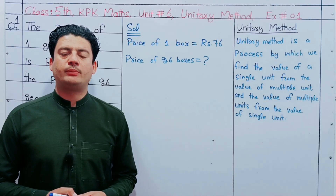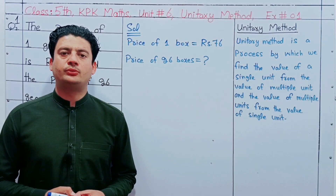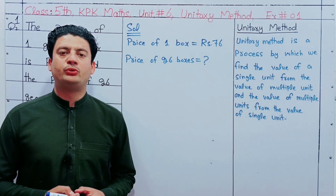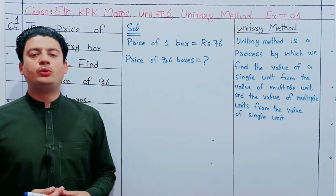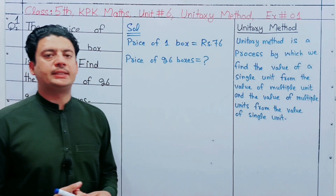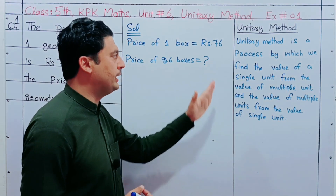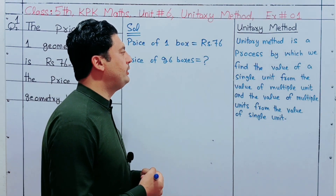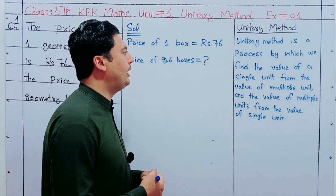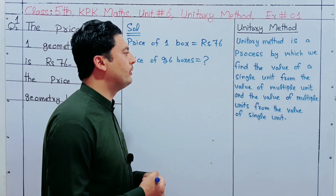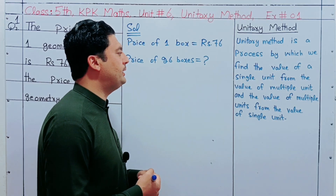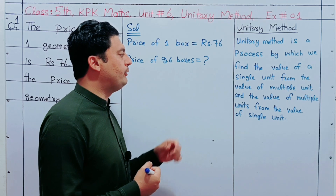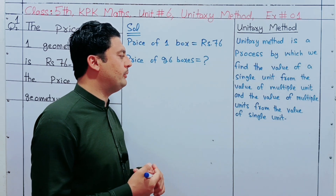Bismillahirrahmanirrahim. I am going to start Class 5, Unit number 6: Unitary Method. Unitary method is a process by which we find the value of a single unit from the value of multiple units, and the value of multiple units from the value of a single unit.